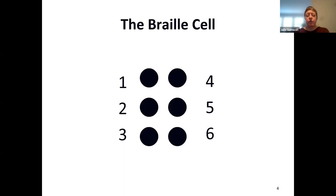A reminder: if you've learned about the braille cell, it's going to be very important when we talk about contractions today to remember that the braille cell is made up of six dots — one, two, three down the left side, four, five, six down the right side. We're going to concentrate on the right side, especially four, five, and six. So do try to remember that.